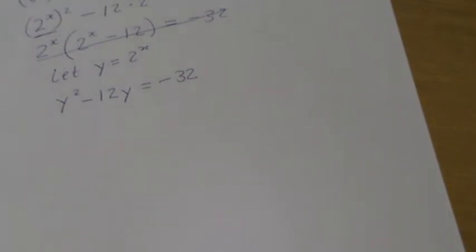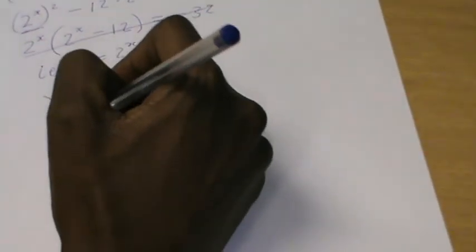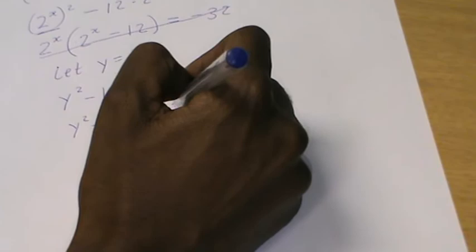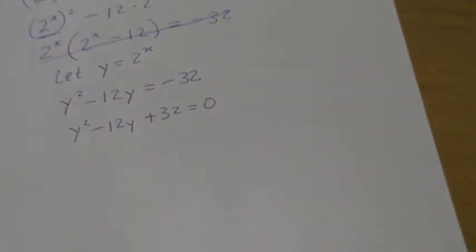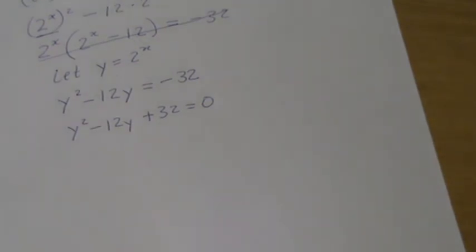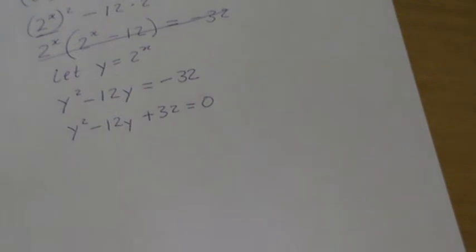After substitution, what we have is y squared minus 12y equals negative 32. This is a quadratic equation. Bringing the 32 to the other side gives us y squared minus 12y plus 32 equals zero. This looks like it can be factorized, so I'm looking for two numbers that multiply to positive 32 and add to negative 12.